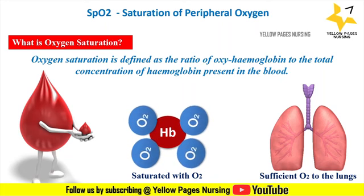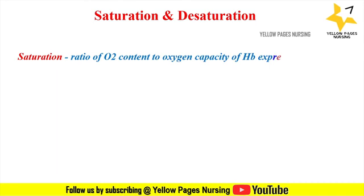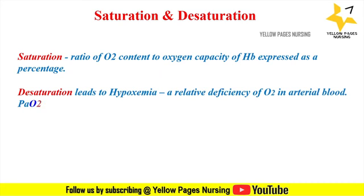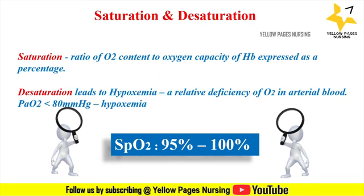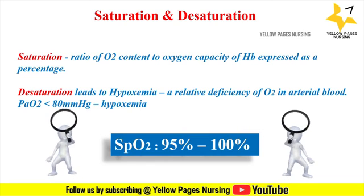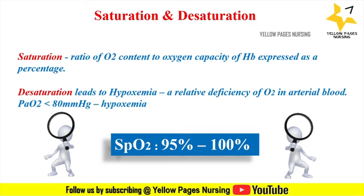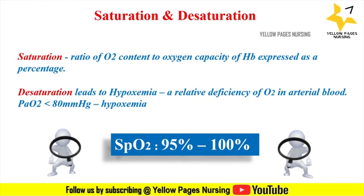Now let's discuss what is oxygen saturation and desaturation. Oxygen saturation is defined as the ratio of oxygen content to oxygen capacity of hemoglobin, expressed as a percentage. Desaturation is a relative deficiency of oxygen in arterial blood, where partial pressure of oxygen is less than 80 mmHg, which leads to hypoxemia. Normally, a healthy individual breathing air at sea level will have an arterial oxygen saturation between 95% to 100%. Extremes of altitude will affect these numbers.